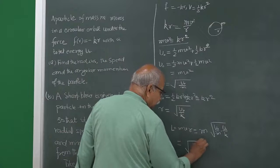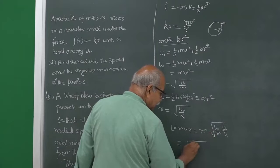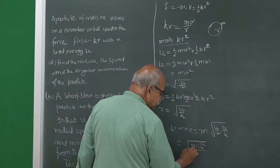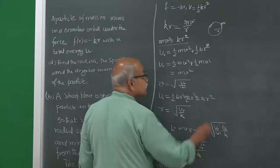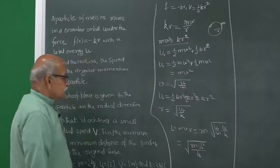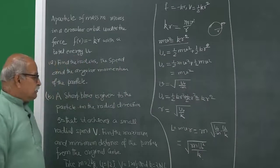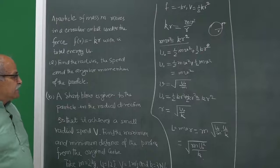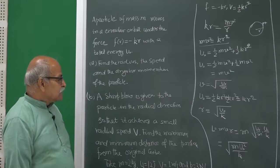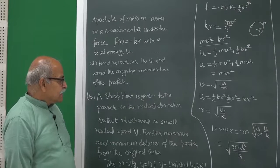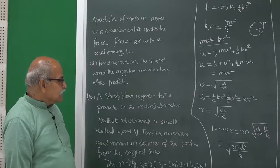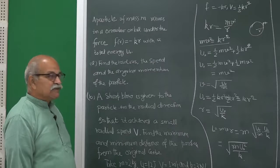That gives L equal to m times the square root of u_naught over m times the square root of u_naught over k, resulting in the square root of m u_naught squared divided by k.